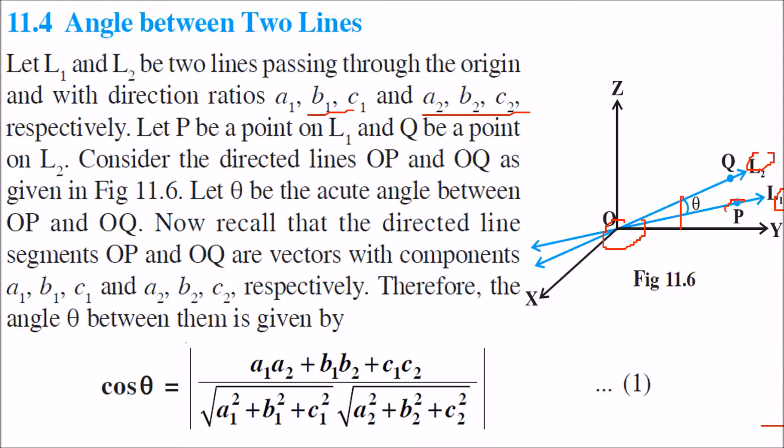Let P be a point on L1 and Q be a point on L2. Consider the directed lines OP and OQ, and they are making theta between them, an acute angle.